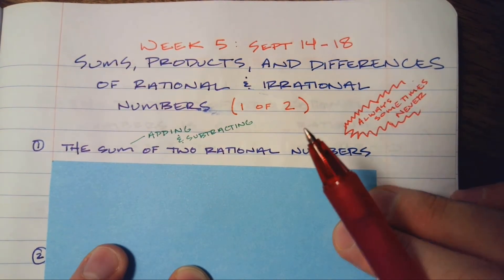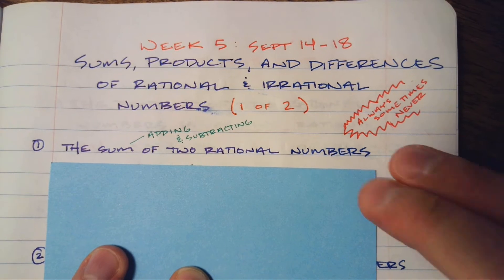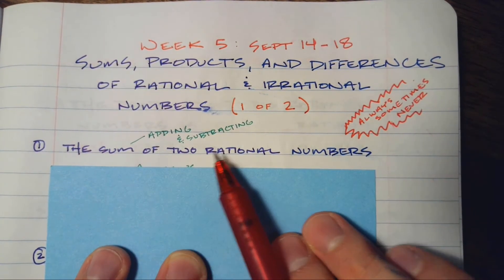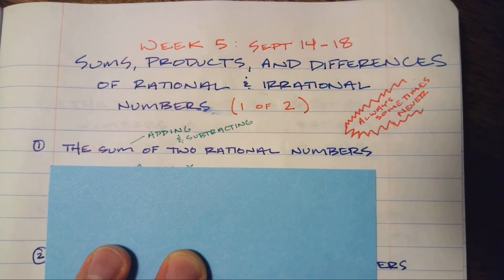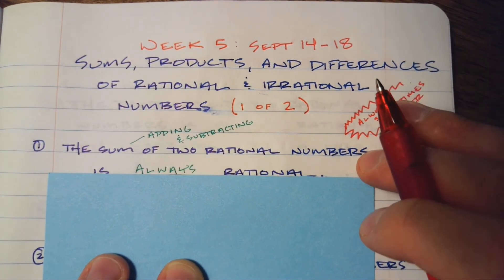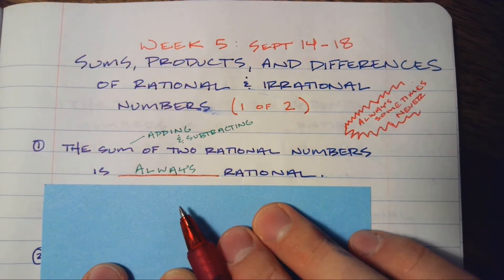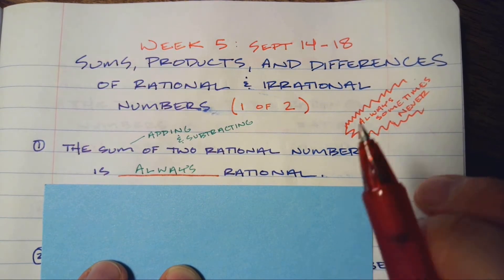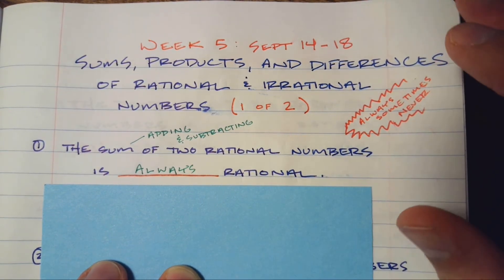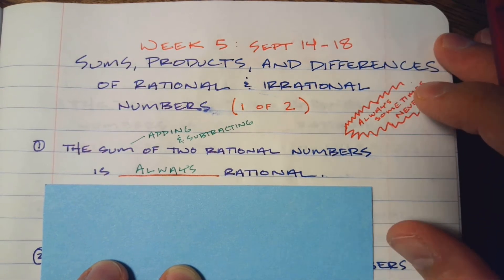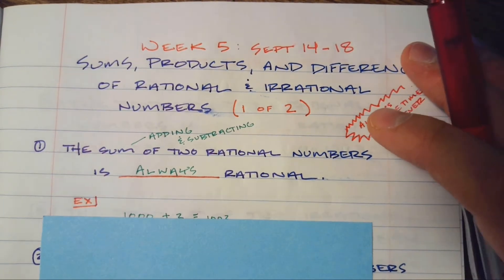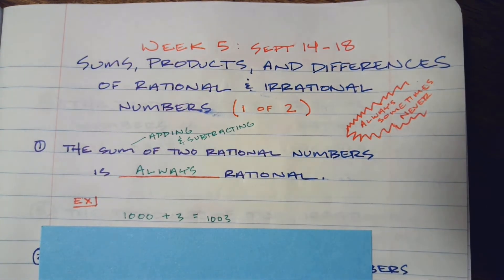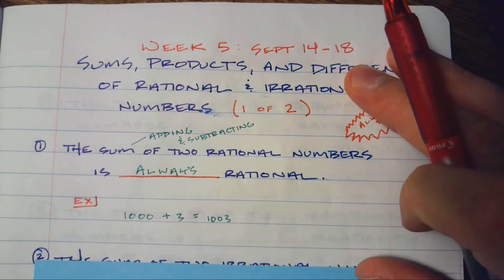We're going to practice these a lot this coming week, but I just want you to have these statements readily available for when that time comes. The sum of two rational numbers is going to always be rational. You've got a 2 and you add a 3, it's going to give you 5. It doesn't suddenly start going off into infinity with a decimal like irrational numbers do. My example here is 1,000 plus 3 — it's going to be 1,003. It's not trying to trick you. It's pretty straightforward.